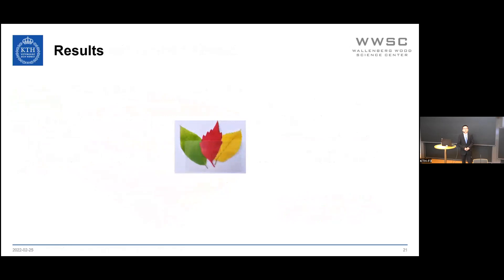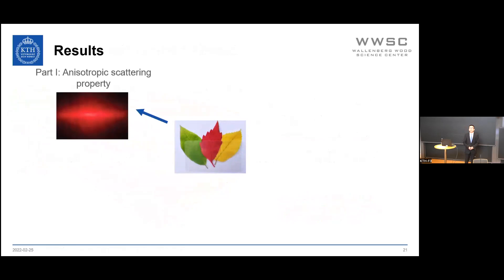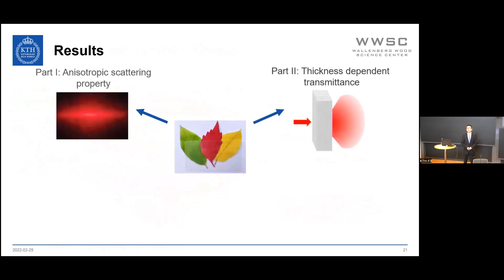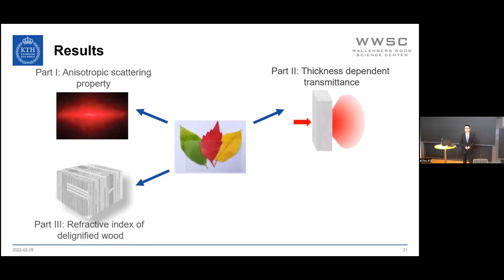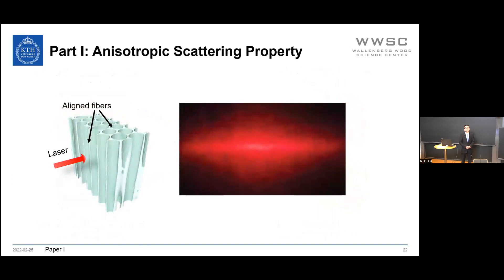The results include four parts: first, the analysis of anisotropic scattering properties of transparent wood; second, thickness-dependent transmittance investigations; third, measurement of the refractive index of delignified wood; and finally, investigation of scattering mechanisms in transparent wood. Now we come to the first part, the anisotropic scattering property of transparent wood.